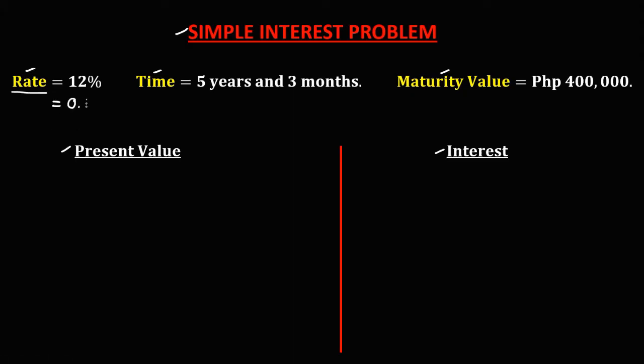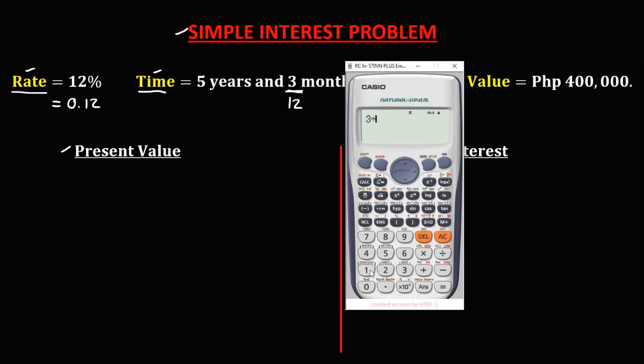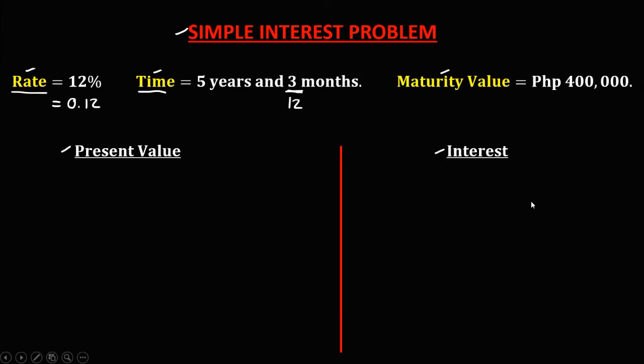And for this time, since we have 3 months, we need to convert this 3 months to years. So divide 3 by 12. We have 3 divided by 12 equals 0.25. Then since we have 5 years, plus 5. So the time is 5.25.